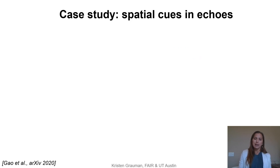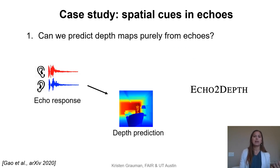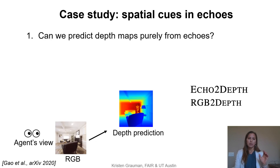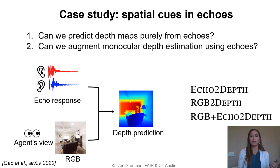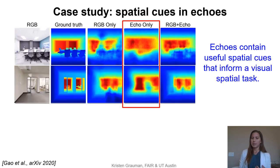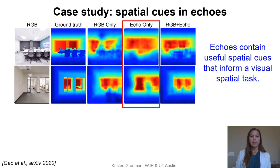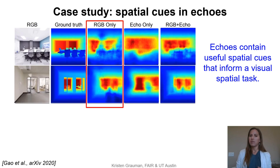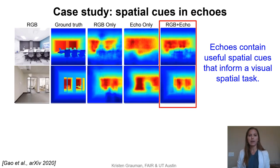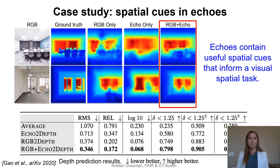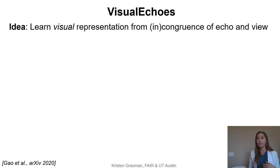We did a case study to see how much spatial information we can pull from echoes alone. We looked at whether we can predict a depth map entirely from echoes — echo-to-depth — and compared that to a monocular RGB-to-depth pipeline, and finally whether things improve when we combine both RGB and echoes to predict depth. The short answer is that there are spatial cues within the audio, and if you produce depth maps from echoes only you get reasonable results; from RGB only also reasonable; and they measurably improve when both cues are incorporated together.